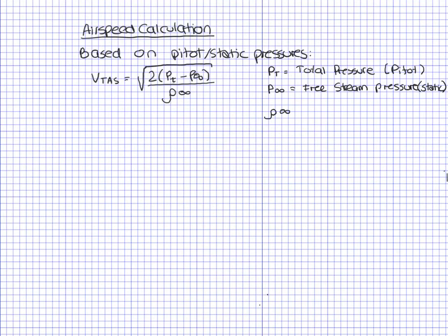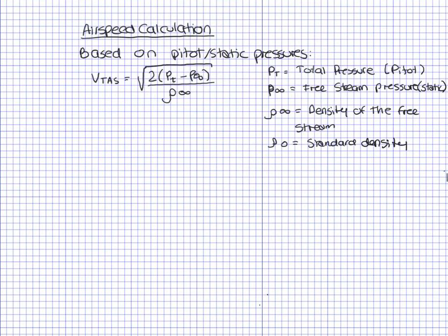Rho-infinity is the density of the free stream, and rho-zero is the standard density. The value of the standard density is 0.002377 slugs per cubic foot. This is the standard density at sea level.